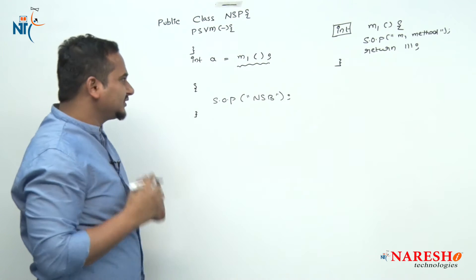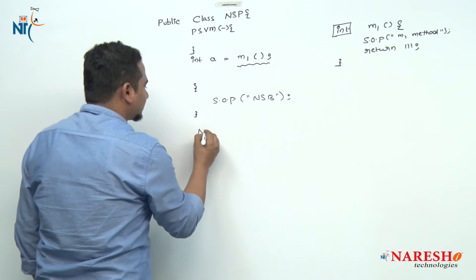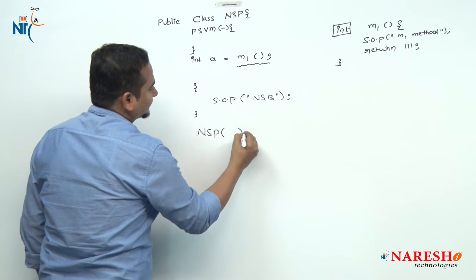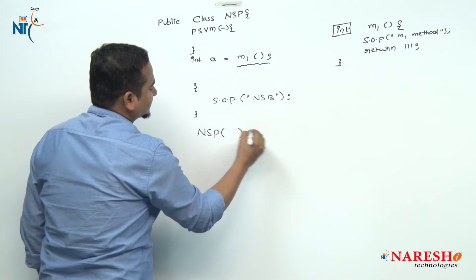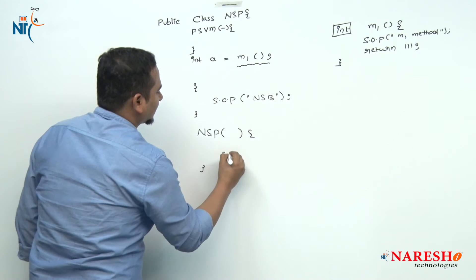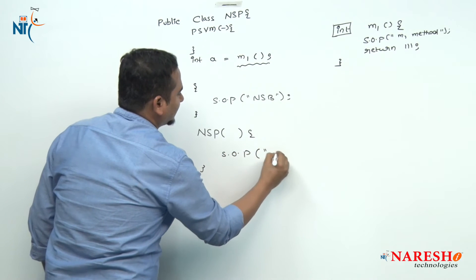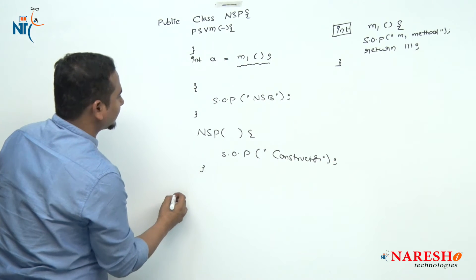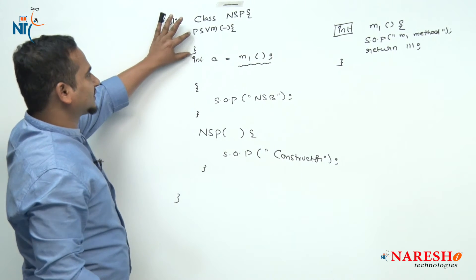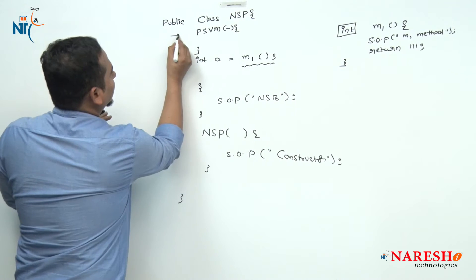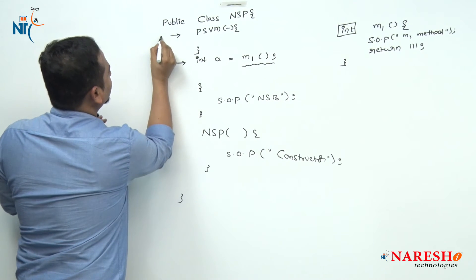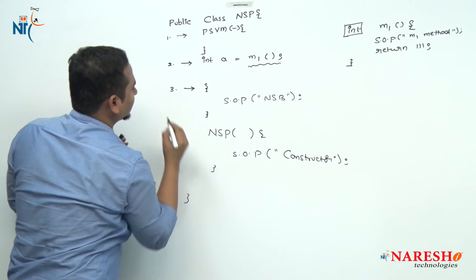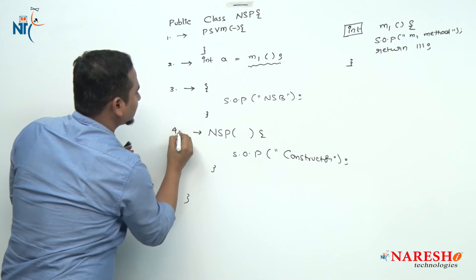After that, let me take one constructor — NonStaticPhase. This is our constructor, and inside I am writing System.out.println with "constructor". So this is our full program: first the main method, second the non-static variable, third the non-static method, fourth the non-static block, and fifth the constructor.